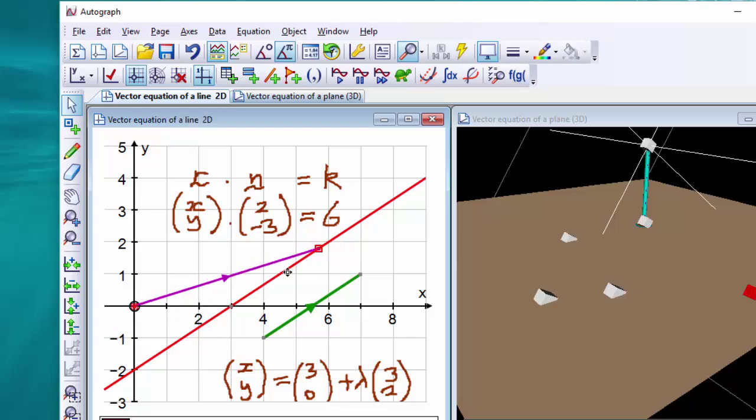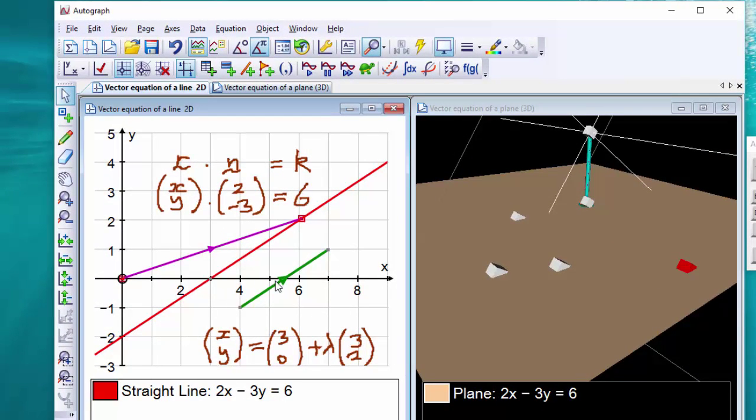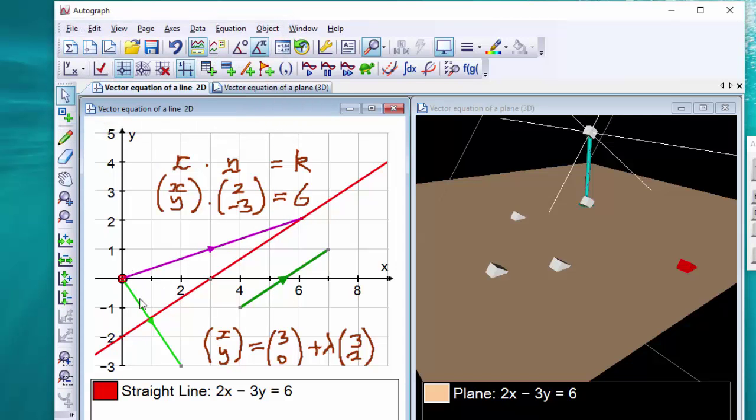Now what about 2 minus 3? Well, 2 minus 3 is the normal vector. Is that right? This straight line is 3 to the right and 2 up, so the normal vector will be 2 to the right and 3 down. So that's correct. So I'm just going to select this point here, and right click, vector, 2 to the right and 3 down.